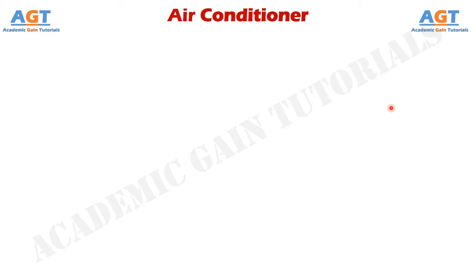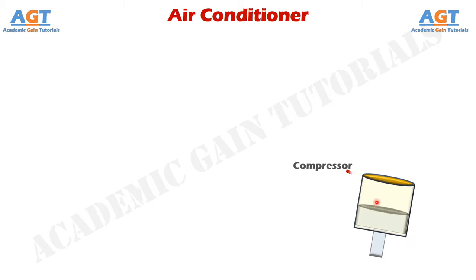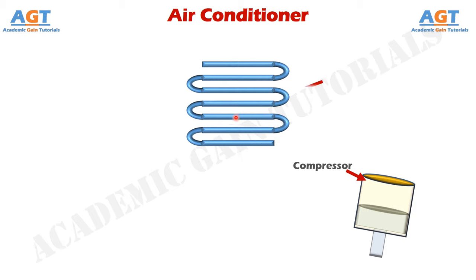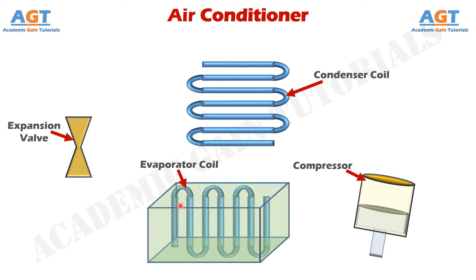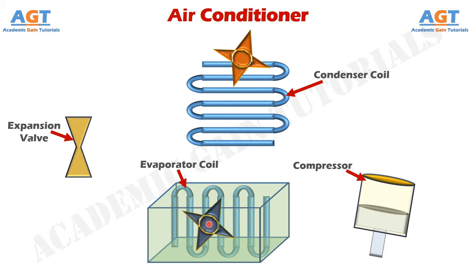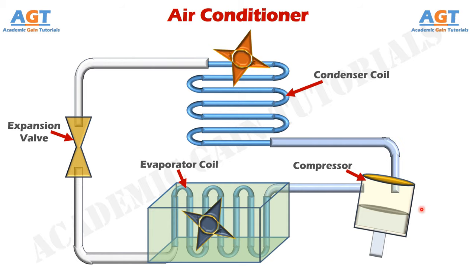First of all, let's see the major components or parts of an air conditioner. Here, we have a compressor, there is a condenser, an expansion valve, and finally an evaporator. It can also be called a cooling effect generator. We have a fan over here, and here. And these are the connecting pipes that connect all these parts together. Thus a closed loop is formed.